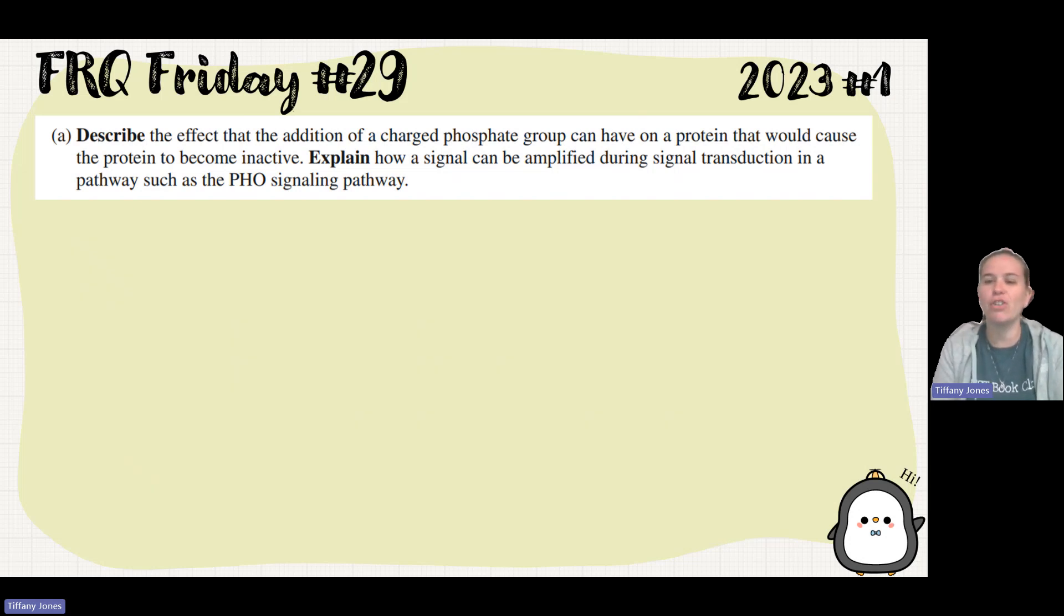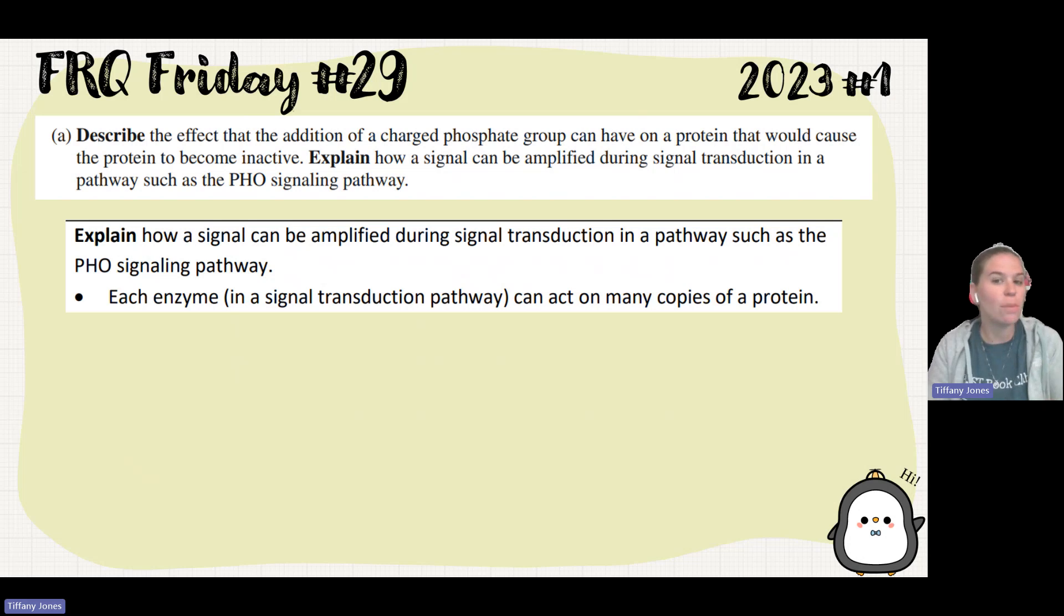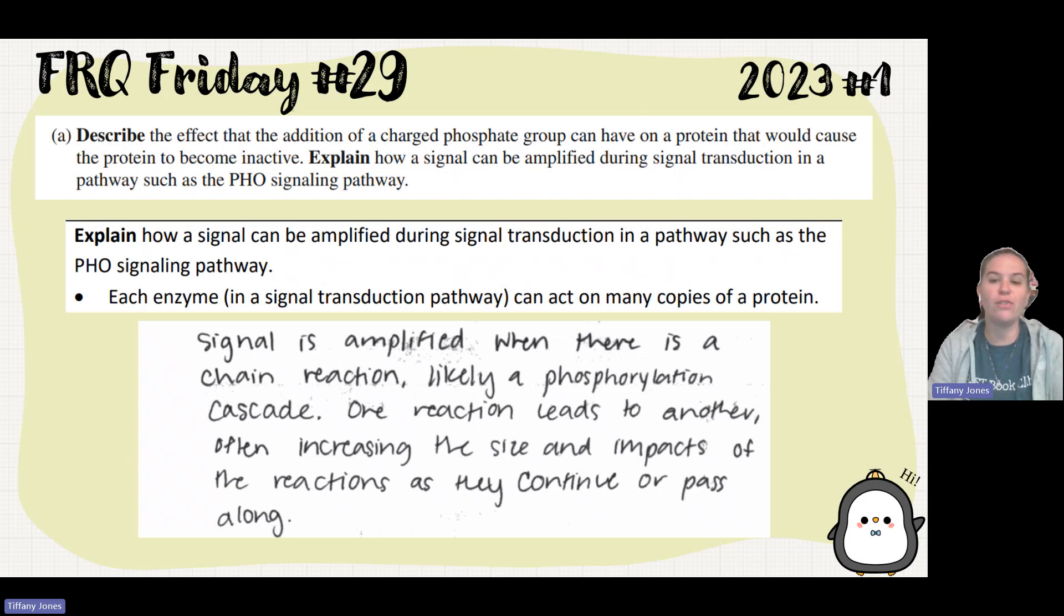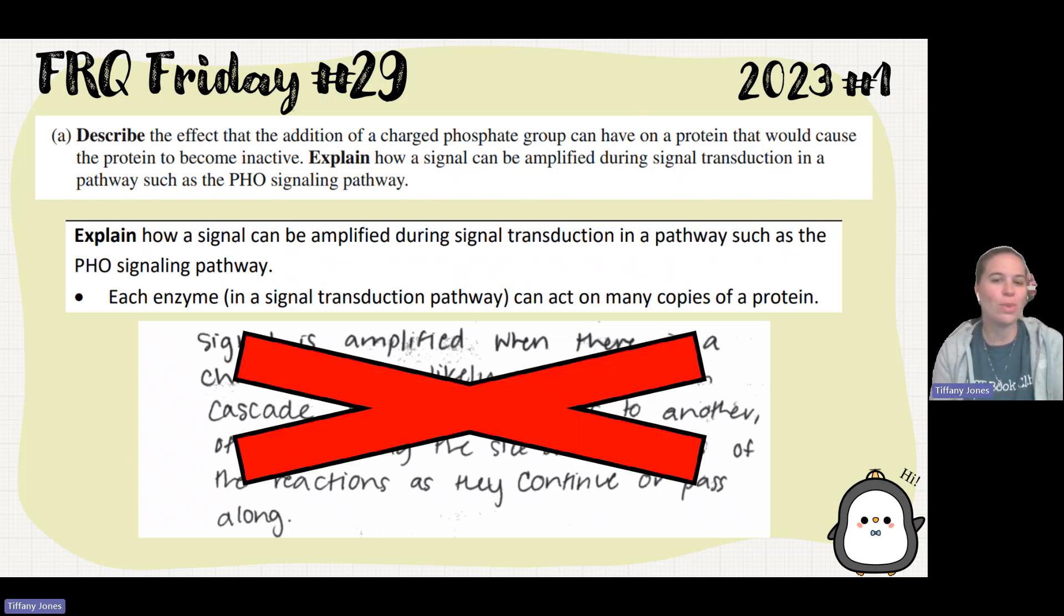Then we need to explain how a signal can be amplified during signal transduction in a pathway, such as the PHO signaling pathway. So we have the receptor, then we have transduction, and then response. When we go through a phosphorylation cascade, it's not just one relay molecule activating the next. One relay molecule is going to activate multiple. As you continue going through that transduction pathway, you activate more and more of these molecules. Each enzyme can act on many copies of a protein, and that's how we see amplification. Signal is amplified when there is a chain reaction, like a phosphorylation cascade. One reaction leads to another, often increasing the size and impacts of the reaction as they continue to pass along. Sadly, the student did not get the point here. The exemplar posted online didn't get a perfect score, and this is the one point they didn't get.